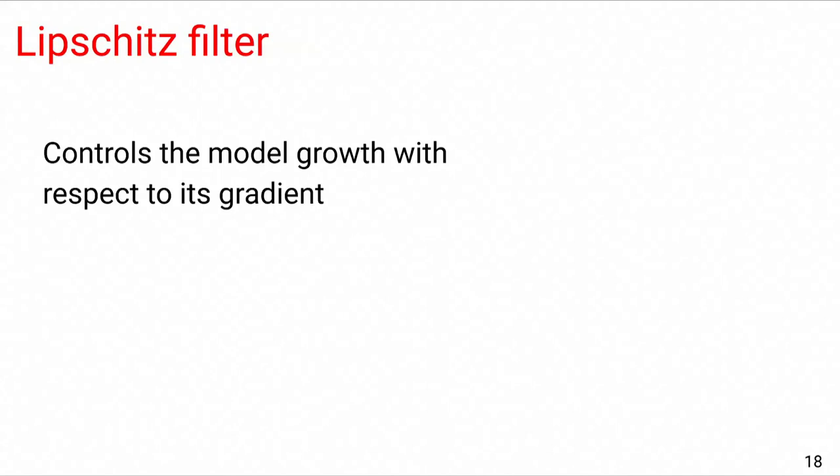Let me explain to you these two filters in a bit of detail. The first one is called the Lipschitz filter. In a nutshell, this filter tries to control the model growth with respect to its gradient. But what does that even mean? To understand this, let's assume that this is the landscape of the loss function we'd like to minimize. Let's assume that this point here called x represents the current state of the model. If we compute the gradient at this point, the result will be something like this, a gradient pointing towards the local minimum here. If we use this gradient to update the state of the model, we'll get a new model state denoted here by y.